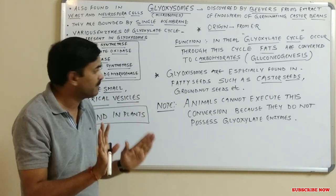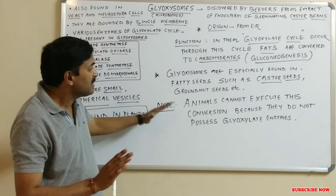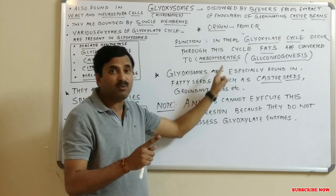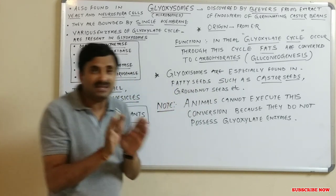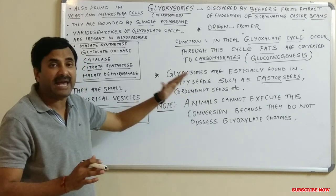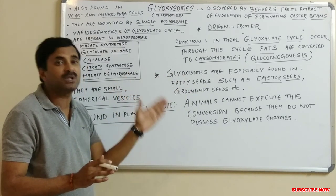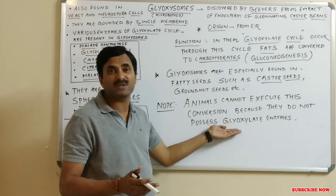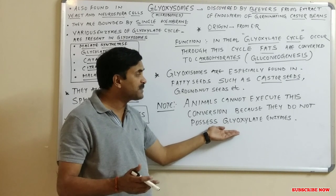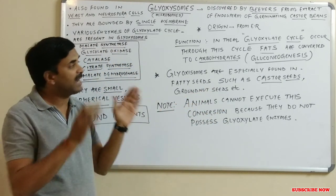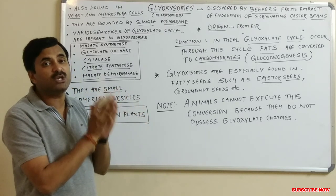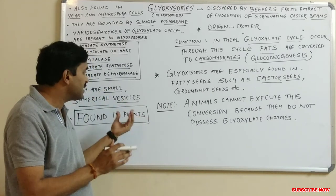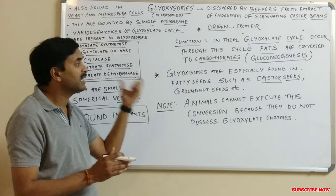Animals cannot execute this conversion — the conversion of fat into carbohydrate can only occur in plant cells. Animals cannot perform gluconeogenesis from fats because they lack the glyoxylate enzymes. Without glyoxylate enzymes, the glyoxylate cycle cannot occur, and therefore fats cannot be converted into carbohydrates in animal cells.